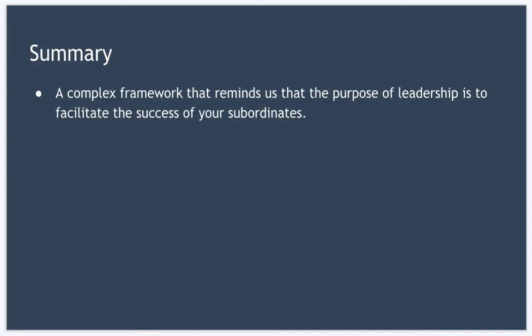So in summary, the path-goal theory of leadership is a pretty complicated framework that reminds us that the purpose of leadership is to facilitate the success of your subordinates. Now the theory proposes there are many ways to make followers successful which you can diagnose using a checklist like the one we showed in the example. So that's it for this lesson. I really hope you enjoyed it and I look forward to speaking to you again soon.